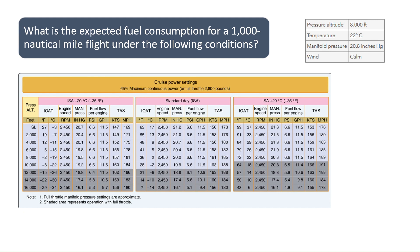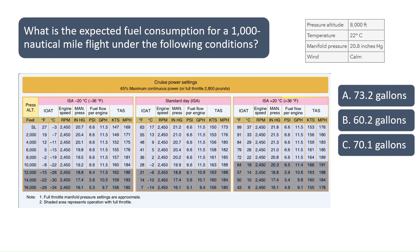Since the temperature is 22 degrees Celsius, which is above standard, we would use the figures on the far right. Go down to the row which highlights the power settings, speed, and fuel flow at a pressure altitude of 8,000 feet. To find the expected fuel consumption, we first need to know the expected time in flight, assuming no wind. A pilot would need to account for winds in the time en route calculation if there were expected headwinds or tailwinds.